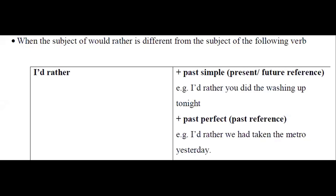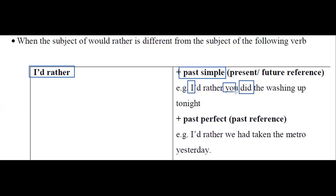When the subject of 'would rather' is different from the subject of the following verb, things are different. We use 'would rather' plus the subject of the other action, then we use the past simple to express present or future reference. For example: 'I'd rather you did the washing up tonight.' Here the subjects are different — we have 'I' and another subject 'you'.